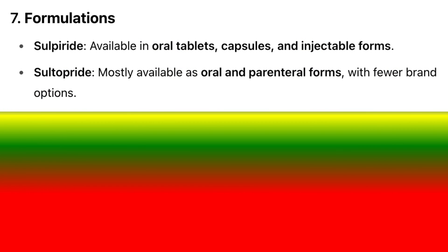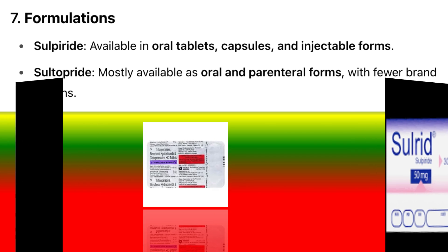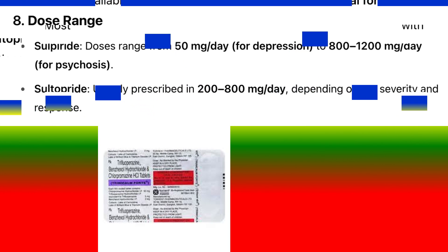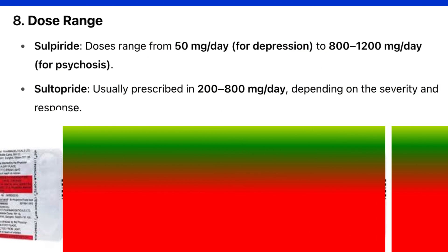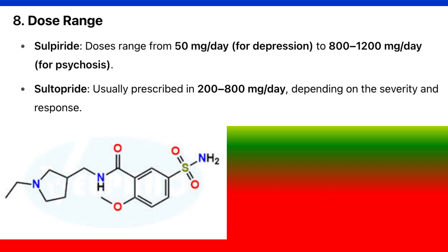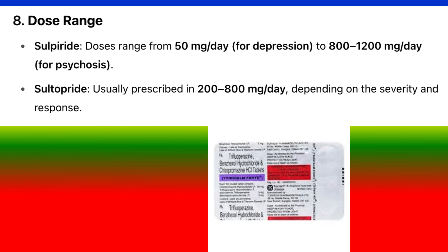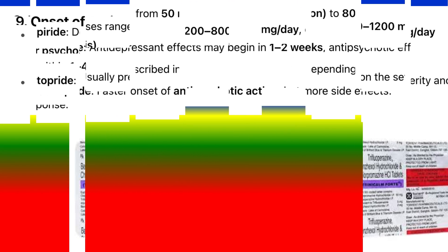7. Formulations: Sulpiride is available in oral tablets, capsules, and injectable forms. Sultopride is mostly available as oral and parenteral forms with fewer brand options. 8. Dose range: Sulpiride doses range from 50 mg per day for depression to 800–1200 mg per day for psychosis. Sultopride is usually prescribed at 200–800 mg per day depending on severity and response.